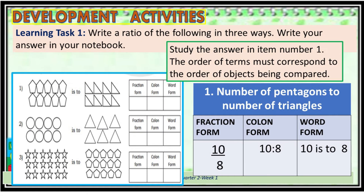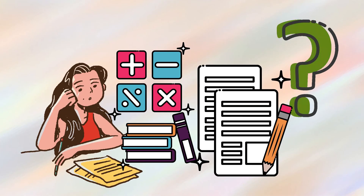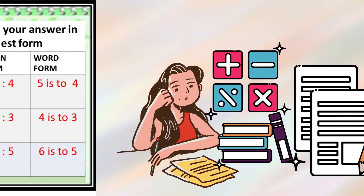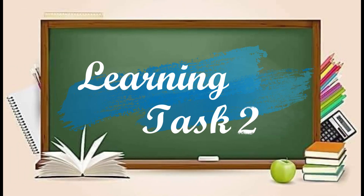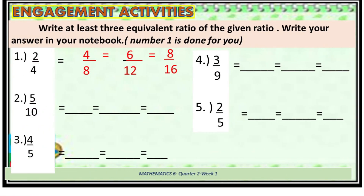Learning Task 1: Write a ratio of the following in 3 ways. Write your answer in your notebook. Study the answer in item number 1. The order of terms must correspond to the order of objects being compared. Change your answer to simplest form if possible. Check your answers for items 2 and 3. Write at least 2 to 3 equivalent ratios of the given ratio. Write your answers in your notebook.